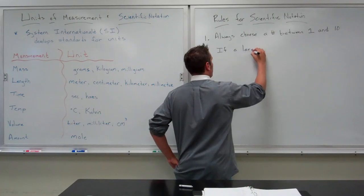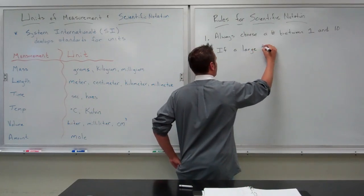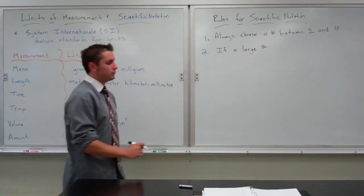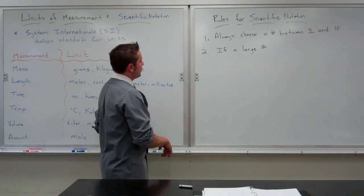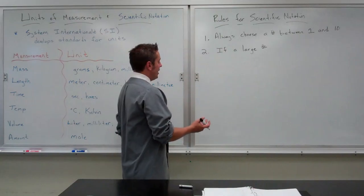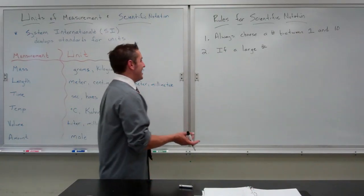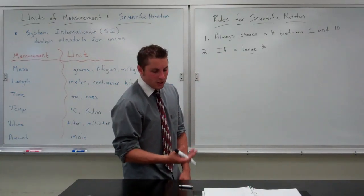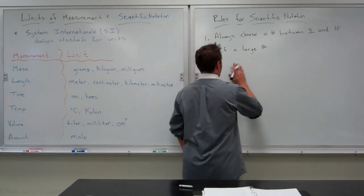If we're working with a large number, move the decimal place as many places to the right to get to the end of the number, and will always lead to a positive exponent.